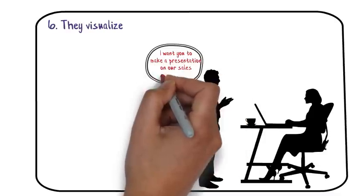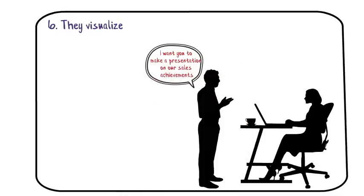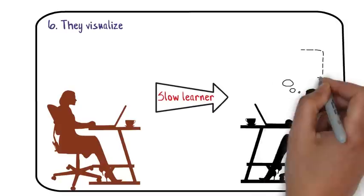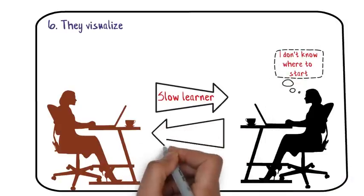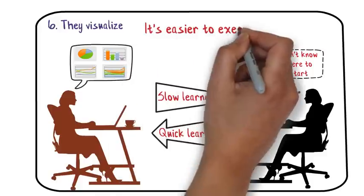Say for example your boss tells you to create a PowerPoint presentation on a certain topic and when you open PowerPoint you have no idea where to start. On the other hand, fast learners will first create a vague presentation in their minds so when they actually work on it, it's easier.